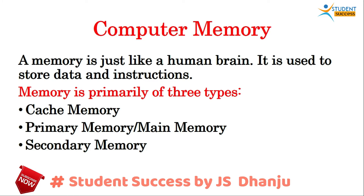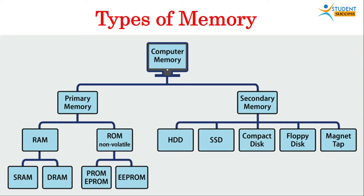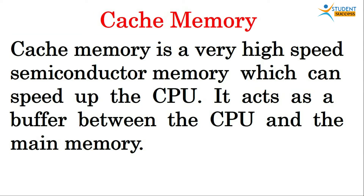Primary memory, main memory, cache memory, and secondary memory — these are the types of memory. With the help of this chart, we will discuss the types of memory. Computer memory is categorized into two types: primary and secondary. Under primary memory there is RAM and ROM. Under RAM there are two categories: SRAM and DRAM. Under ROM there is PROM, EPROM, and EEPROM. Under secondary memory there is HDD, SSD, compact disc, floppy disk, and magnetic tape.